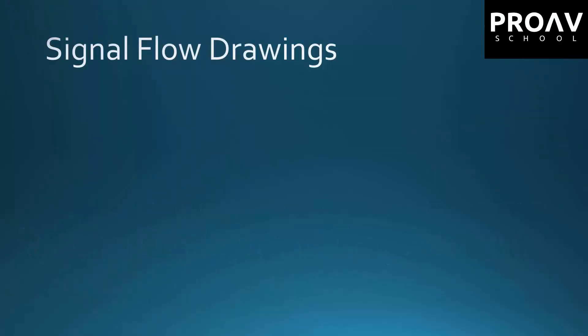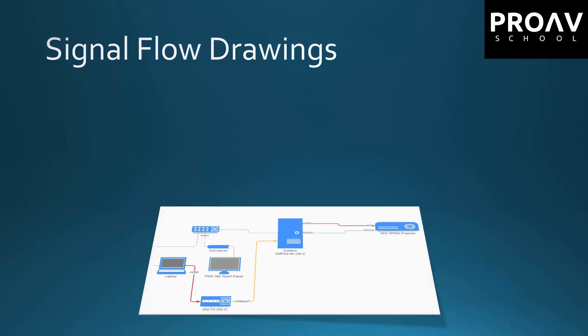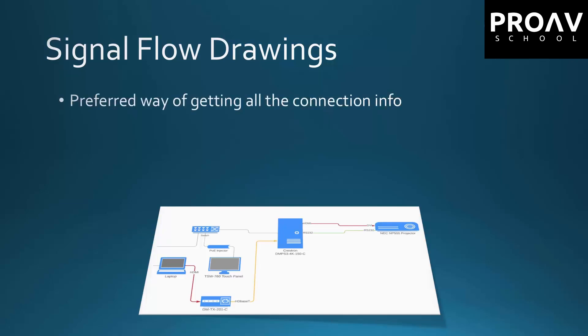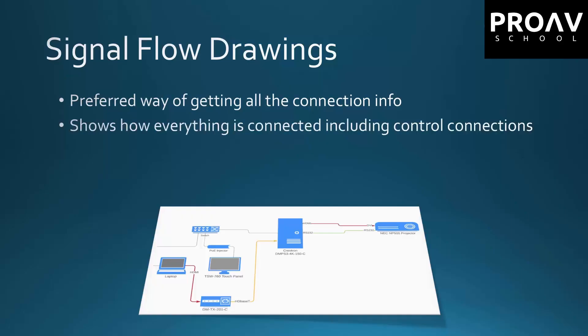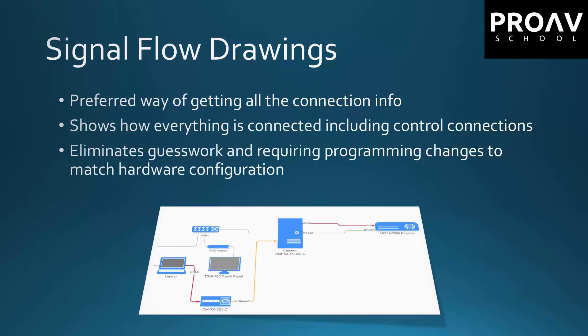The first thing is signal flow drawings. A signal flow drawing will tell you how everything is connected and will help you figure out how you're supposed to make things work. It's the preferred way of getting all the information that you need and it eliminates a lot of the guesswork. I've found when I do projects that don't have a signal flow drawing or it's not done very well, I have to go back and forth as a programmer changing things because the installation doesn't match what I had planned out. So having signal flow drawings obviously helps everybody.